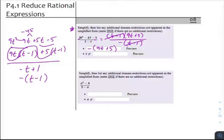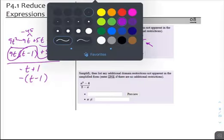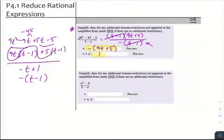My additional domain restriction, I saw that I canceled a factor from my denominator. It's no longer apparent that t cannot equal 1, so I need to include that as a domain restriction. And so that would be the answer that I would need for this problem.